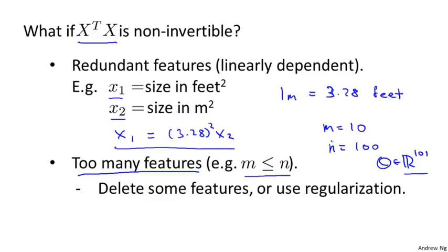You're trying to fit 101 parameters from just 10 training examples. And this turns out to sometimes work, but to not always be a good idea, because as we'll see later, you might not have enough data if you have only 10 examples to fit 100 or 101 parameters. We'll see later in this course why this might be too little data to fit this many parameters.